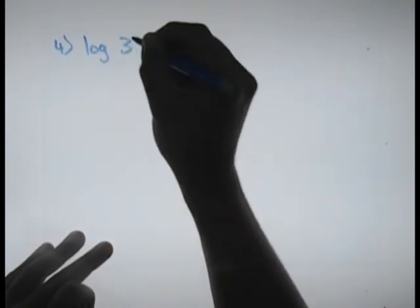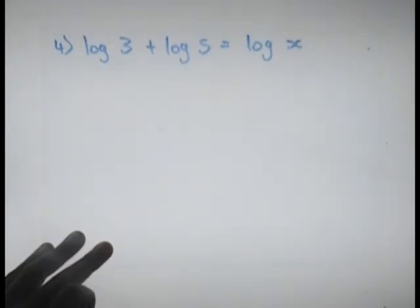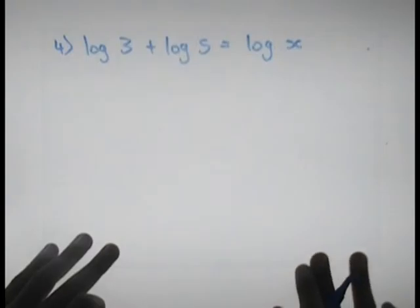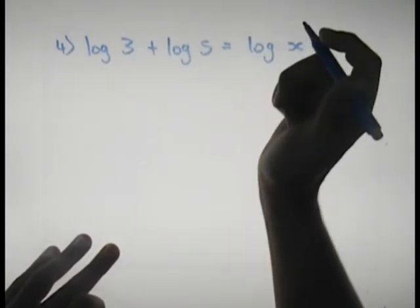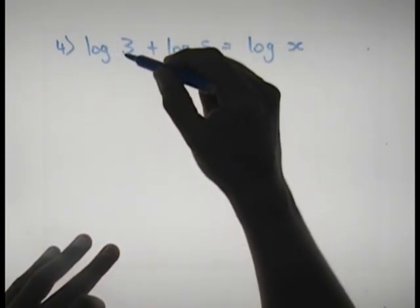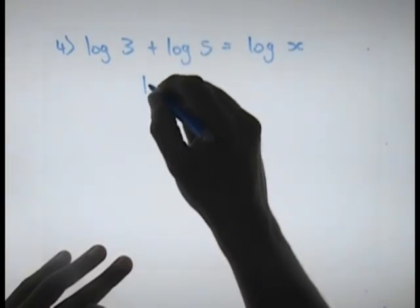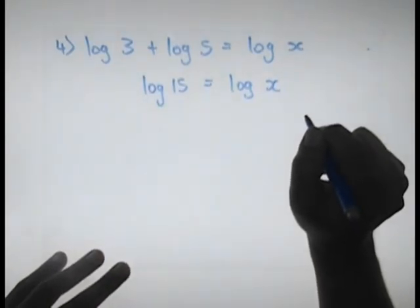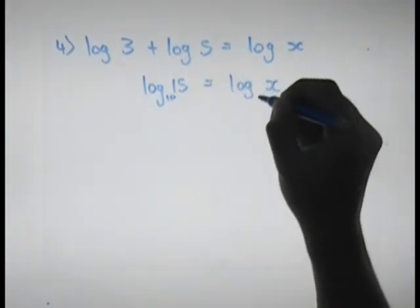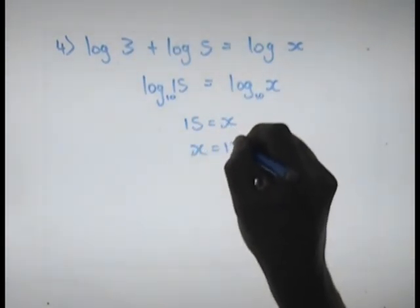The fourth solve-for-x question was: log 3 plus log 5 equals log x. Remember the first law of logarithms — both are to a common base of 10. Log 3 plus log 5 can be combined using Law 1 to give log 15, so log 15 equals log x. Since the bases are the same on both sides, we can drop the logs, giving x equals 15.